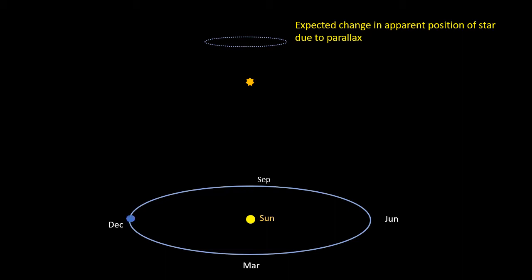What Bradley was looking for was a small shift in the position of Eltanin, known as the parallax, and that's what I'm going to talk you through briefly now. So if we start in December, the direction of the star is shown by the purple line.